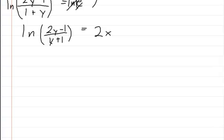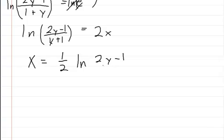So now just divide by 2, and you're going to get x is equal to 1 half times the natural log of 2y minus 1 divided by y plus 1.